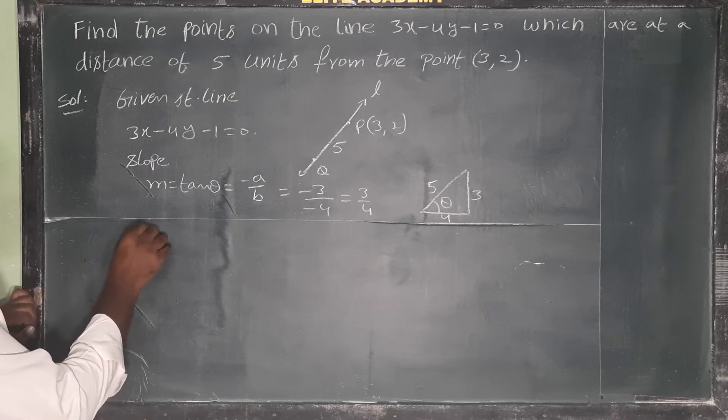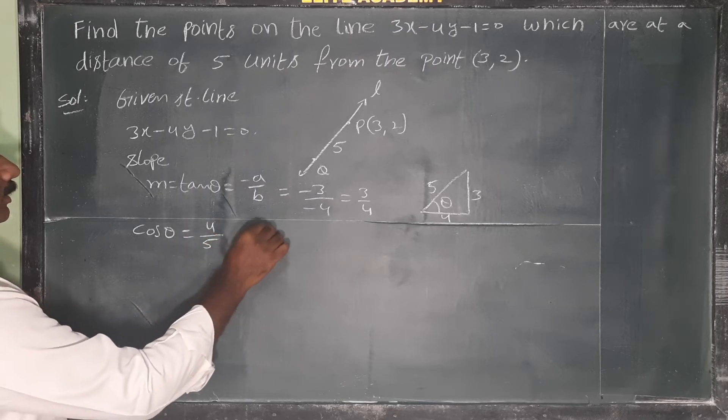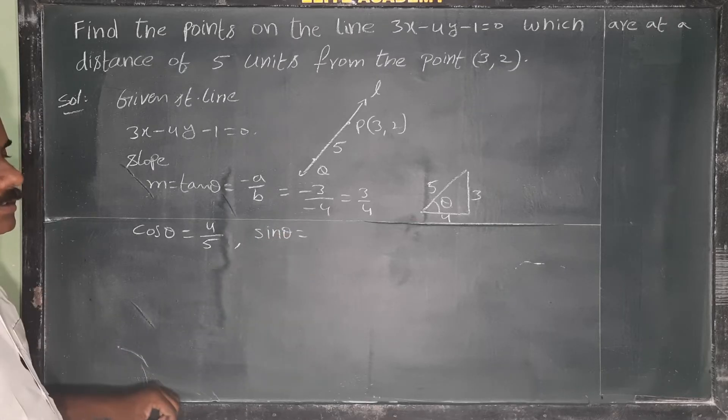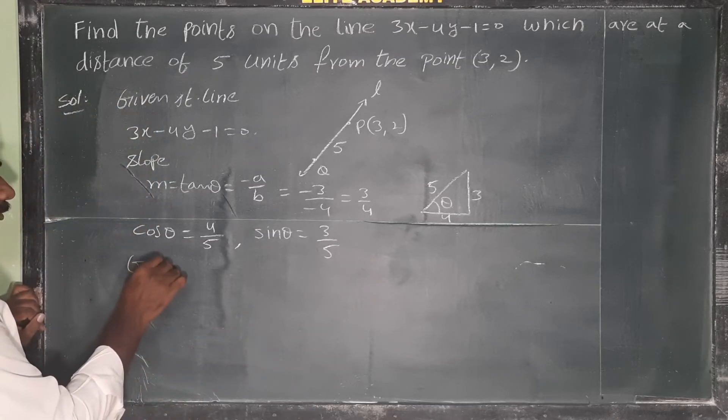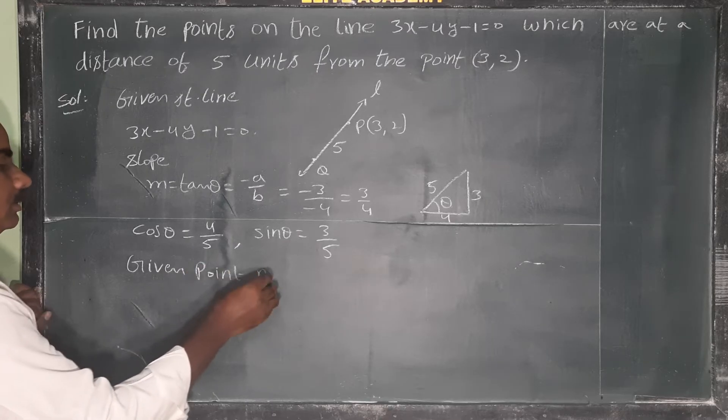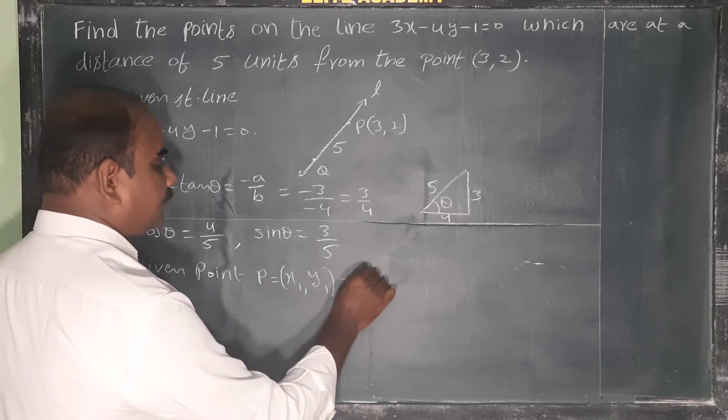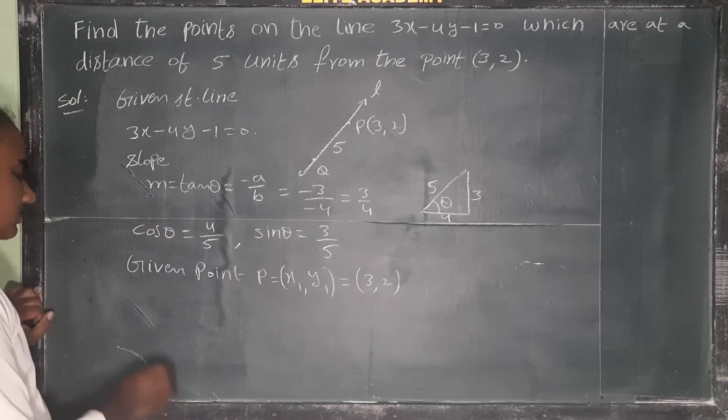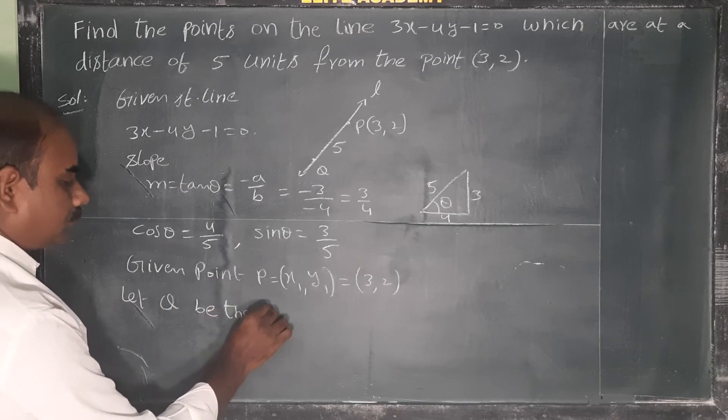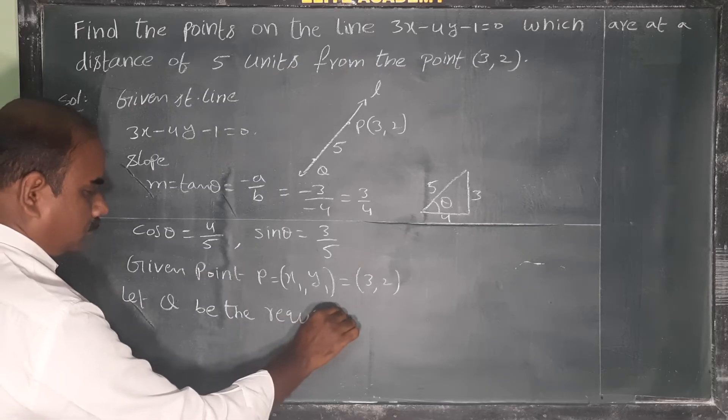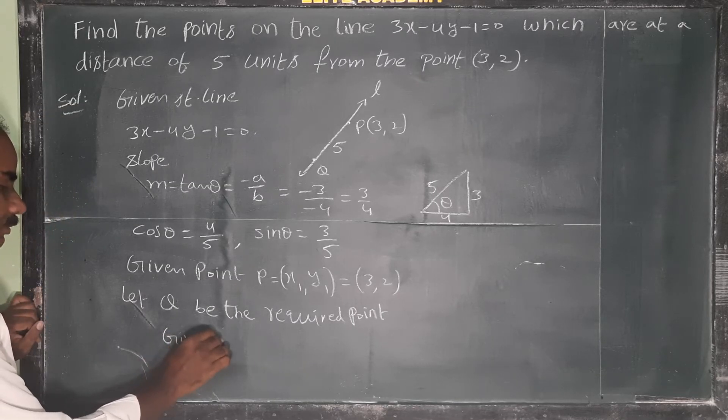This is 3 and this is 4, so hypotenuse is 5. From this we can write cos theta value: cos theta means adjacent side by hypotenuse, that is 4 by 5. Sin theta means opposite side by hypotenuse, that is 3 by 5. Given point P (x₁, y₁), let us say it is (x₁, y₁) which is equal to (3, 2). And let Q be the required point.